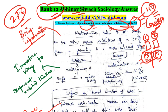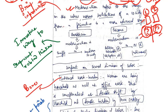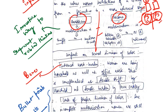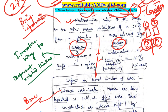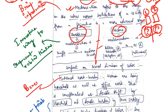Abhinav starts off by defining the term modernization, and there is an extremely beautiful tabular representation with two columns — Durkheim and Parsons — and their work on modernization is explained here. Just imagine the impact this will have on the evaluator. The evaluator tends to feel that the candidate knows how to articulate and present their points in a very lucid and easy-to-understand manner.